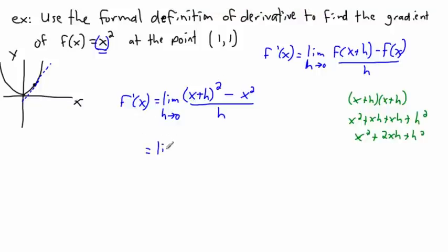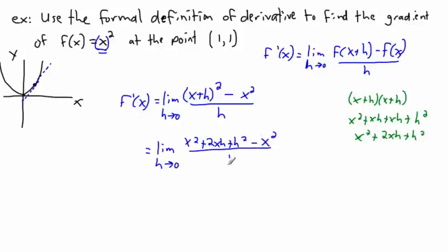So continuing: the limit as h approaches 0 of [x² + 2xh + h² - x²] / h. The x² terms cancel — positive x² minus x² gives nothing. So I'm left with [2xh + h²] / h.